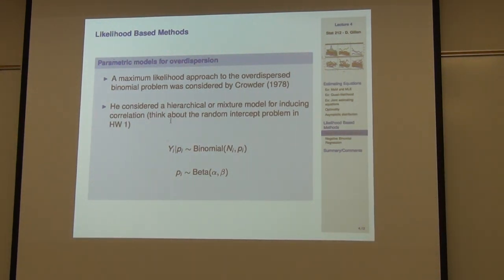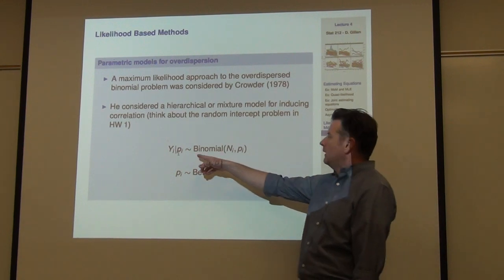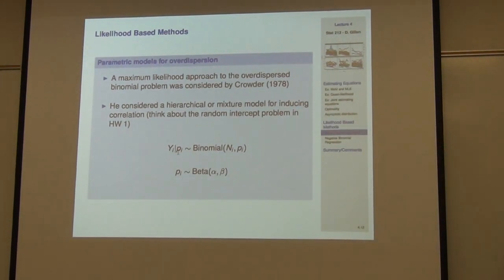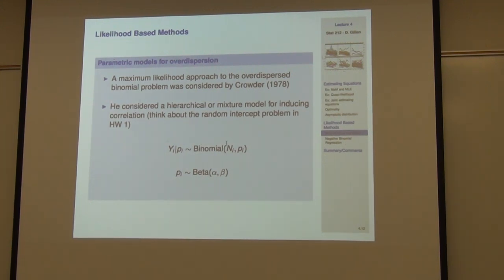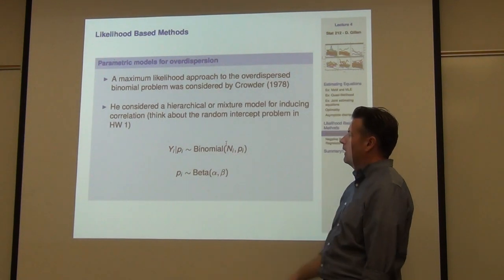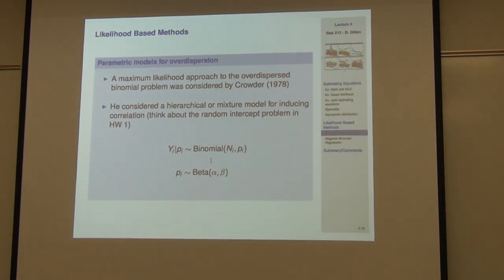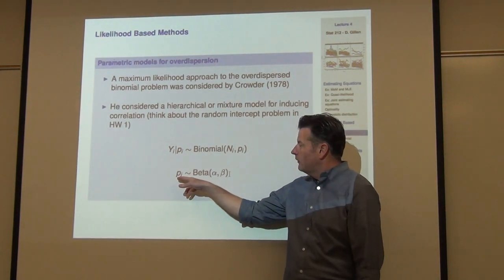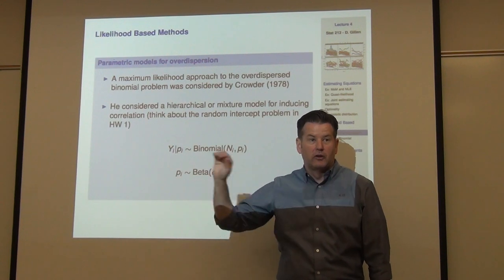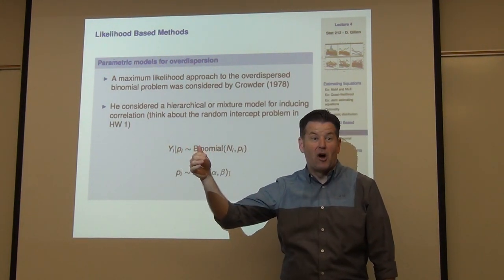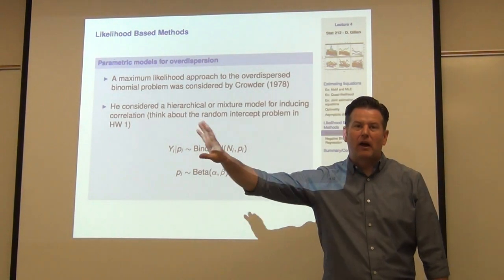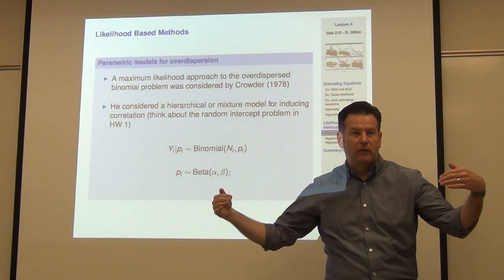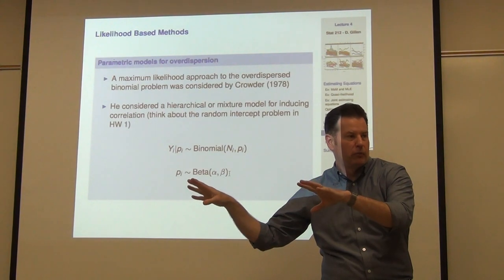What Prouder did was he took Y_i — in our case, the total number of dead beetles inside of a particular jar — where P_i is the probability of death for a given beetle inside the i-th jar, and N_i is the number of beetles you started with inside that jar. He supposed that P_i is distributed beta, following a beta distribution with parameters alpha and beta. You can think about P_i as conditioning on the concentration of the dose of the drug. If you condition that out perfectly and that was the only differential factor between jars, you should have a homogeneous probability of death.